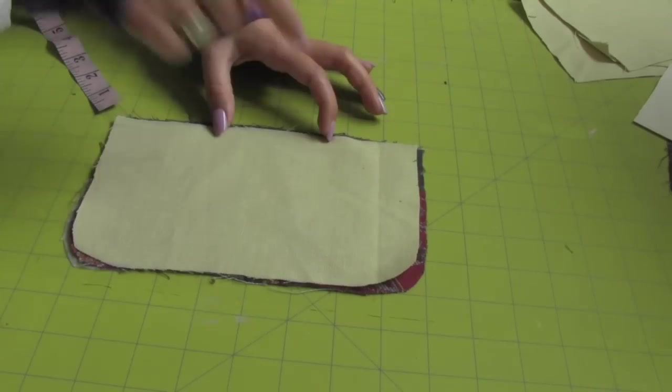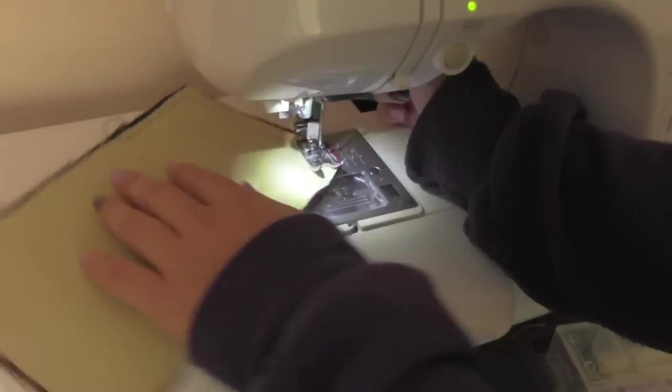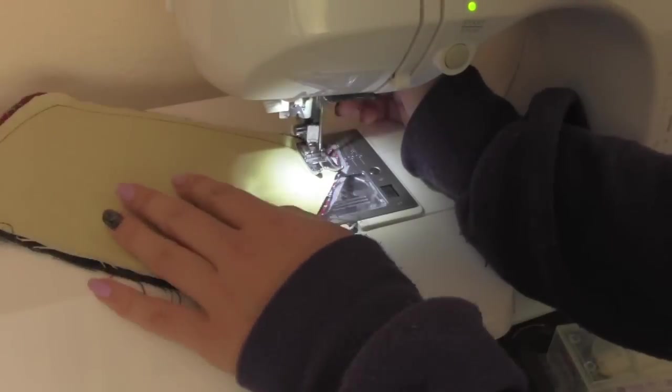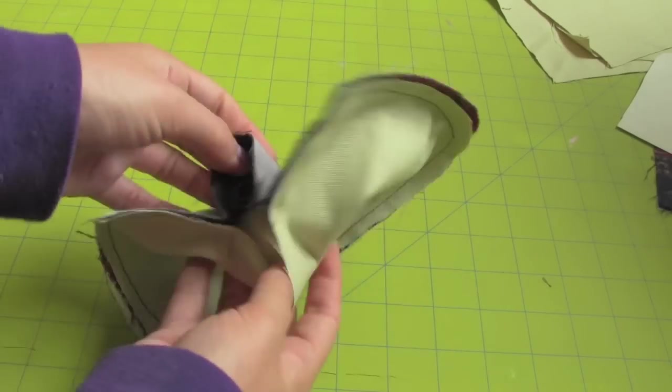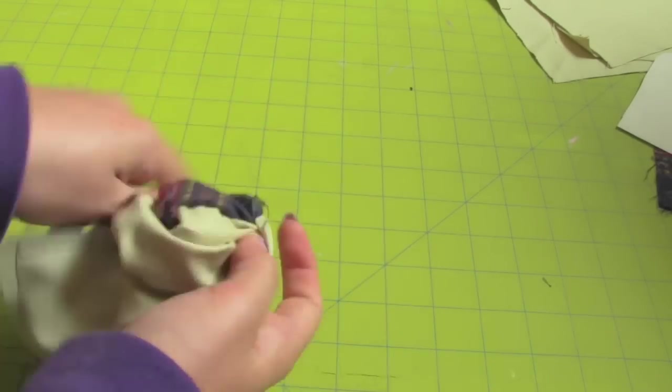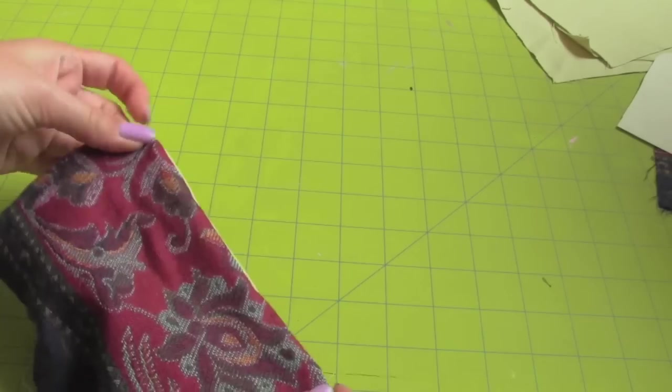Now sew the flap pieces right sides together leaving an opening to flip it inside out. Flip it inside out and top stitch on the edges.